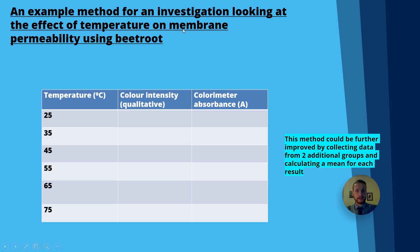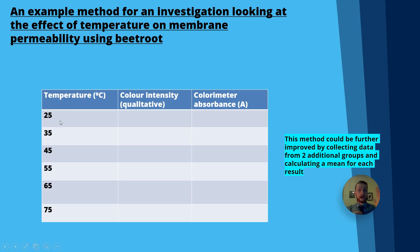This is an example method for investigating the effect of temperature on membrane permeability using beetroot. Myself and my students did this recently and got really nice results — dilute solutions at lower temperatures and very concentrated solutions at higher temperatures. You could improve the method further by collecting data from two additional groups to calculate a mean, which would improve reliability.